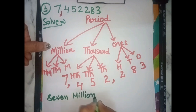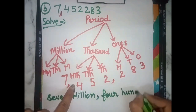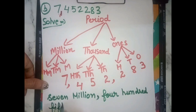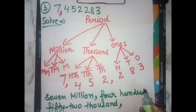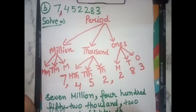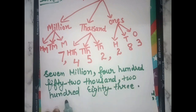Next period: comma, 4 hundred 52 thousand — 52,000 — put comma because we are separating periods. The ones period gives 283. Final answer: 7,452,283.